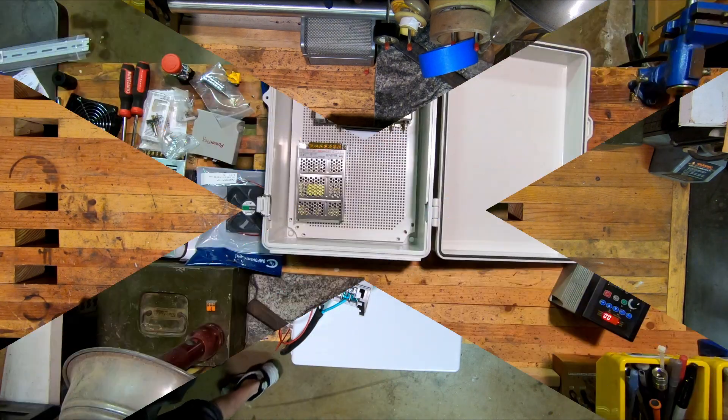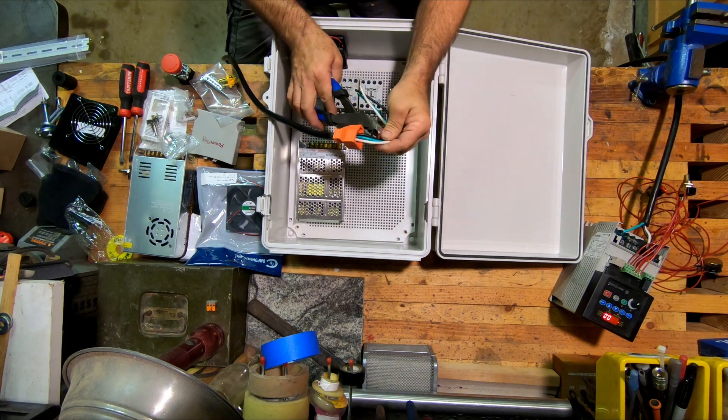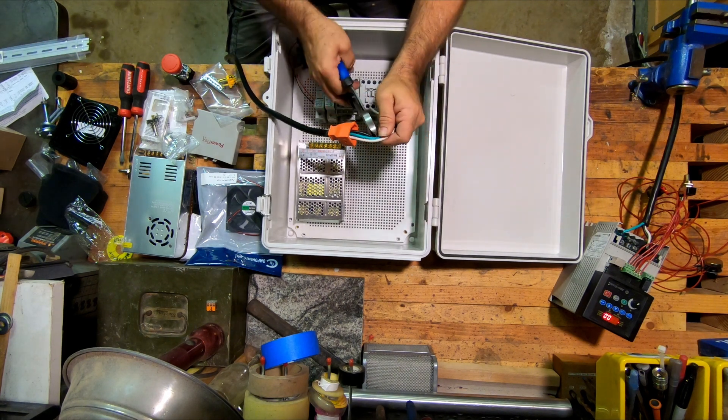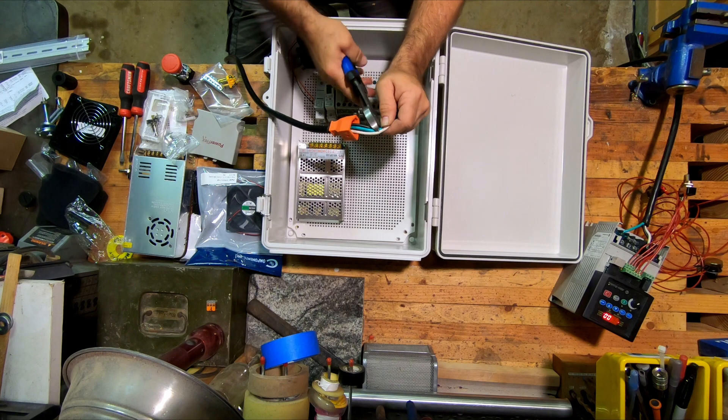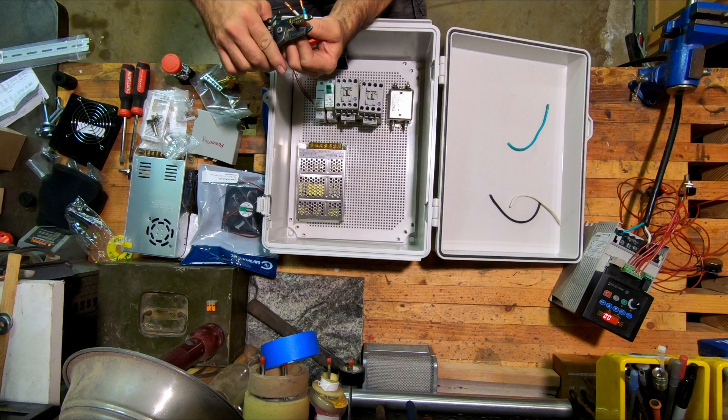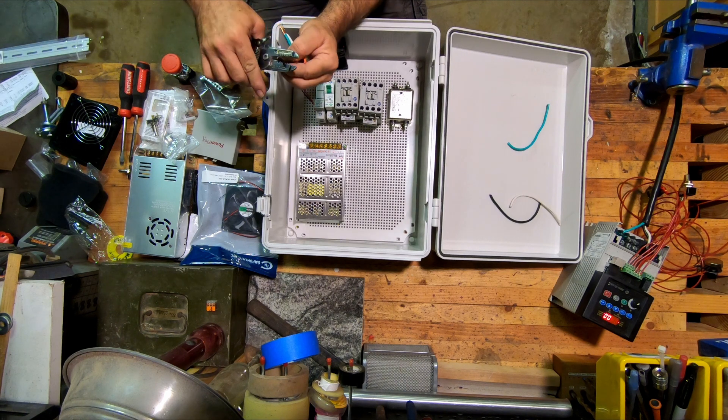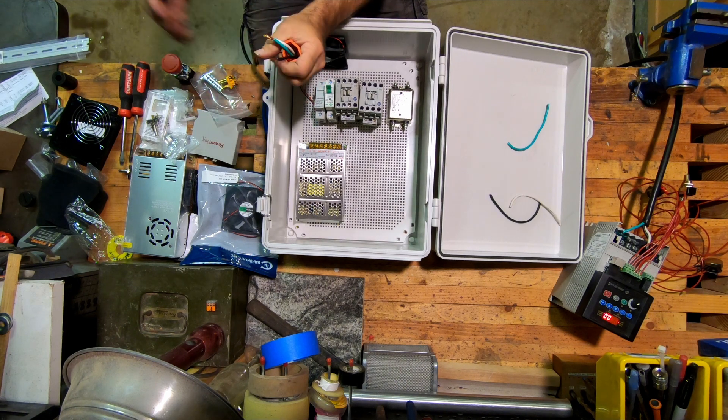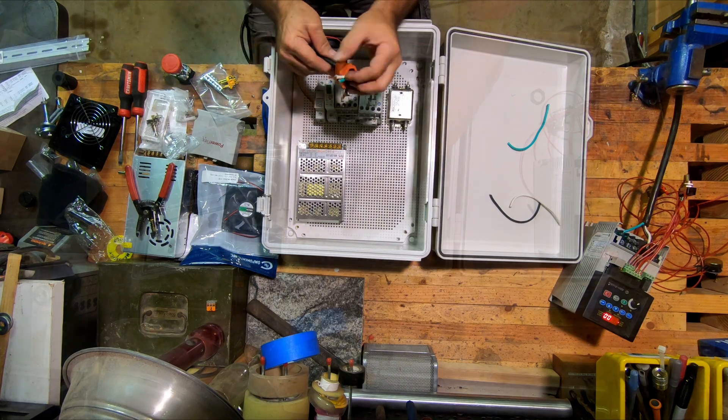Now let's get this panel wired up. This will be the incoming power and will plug into the wall and distribute 120 volts single phase to L1 and L2 on the drive. I've already installed a dedicated breaker in the panel and that will only feed this enclosure.